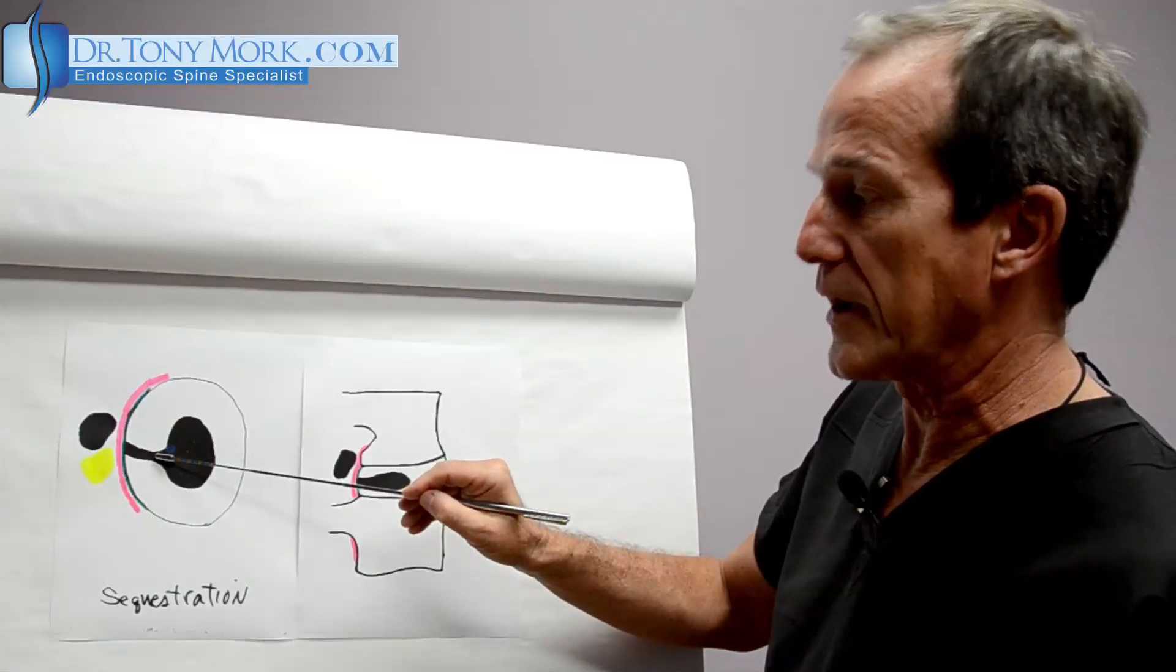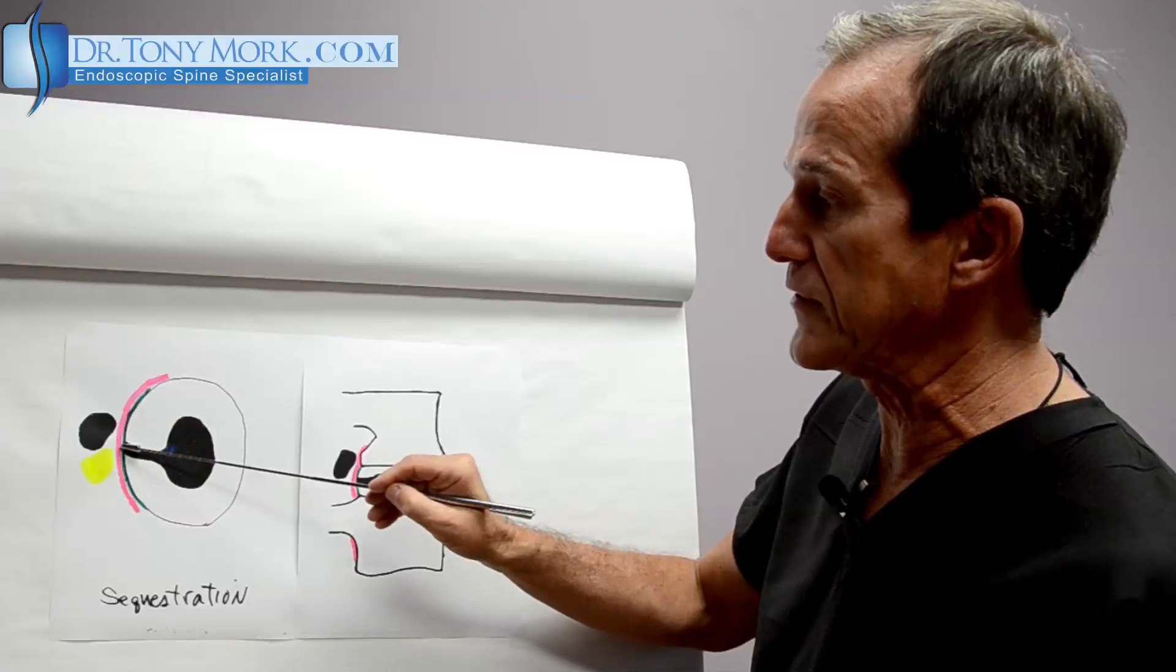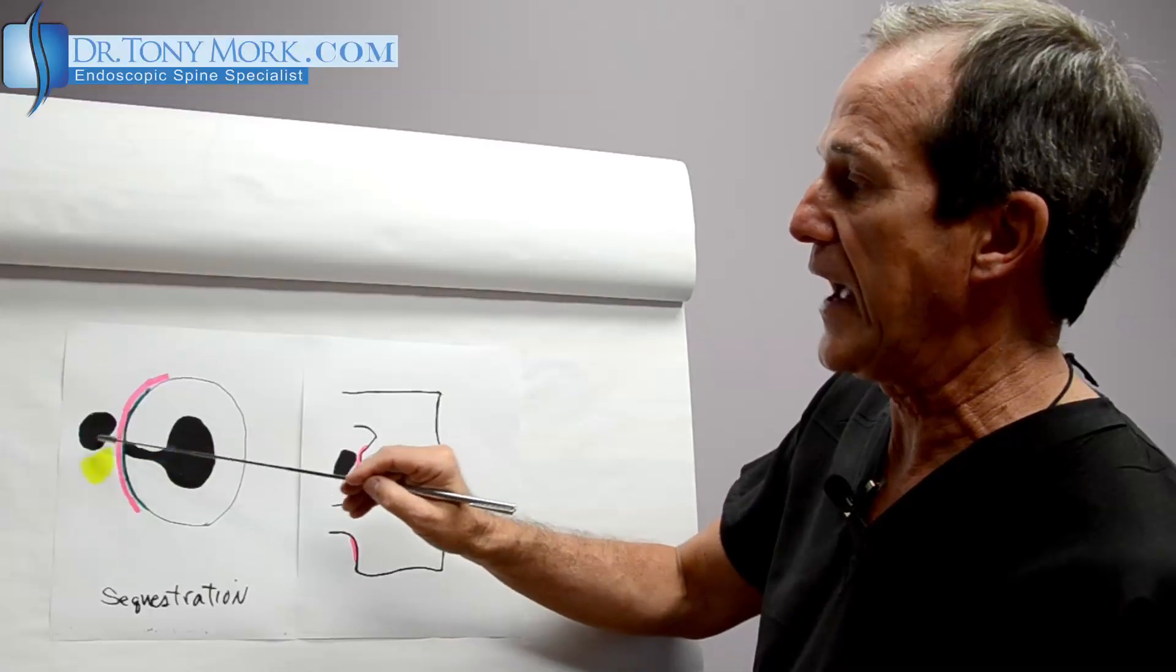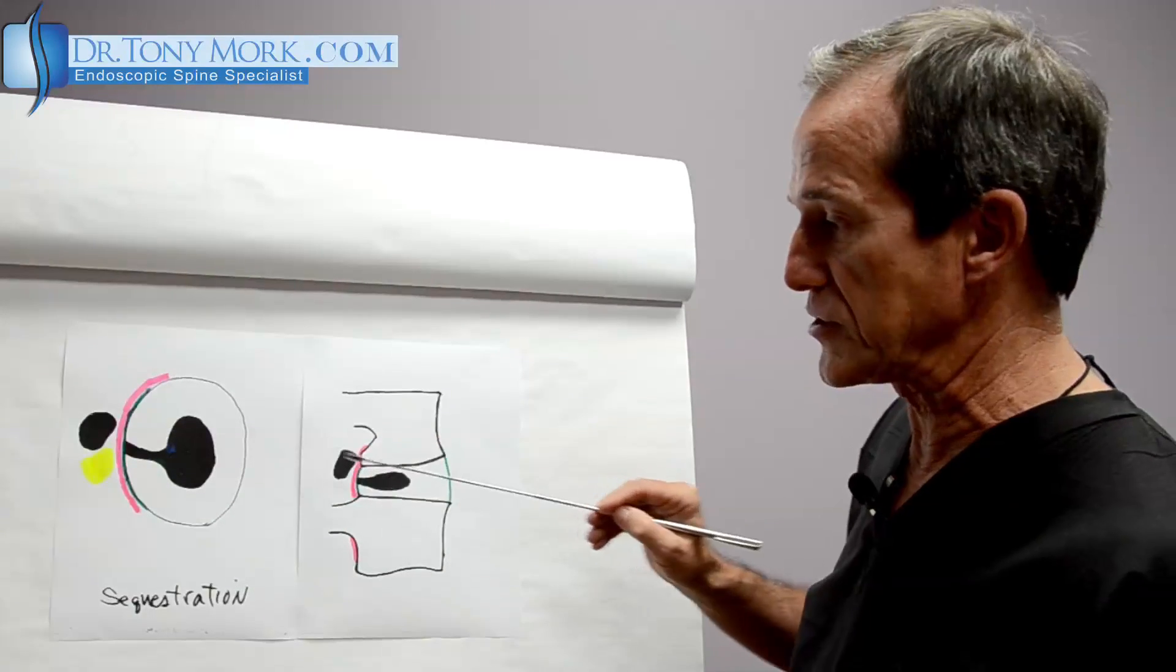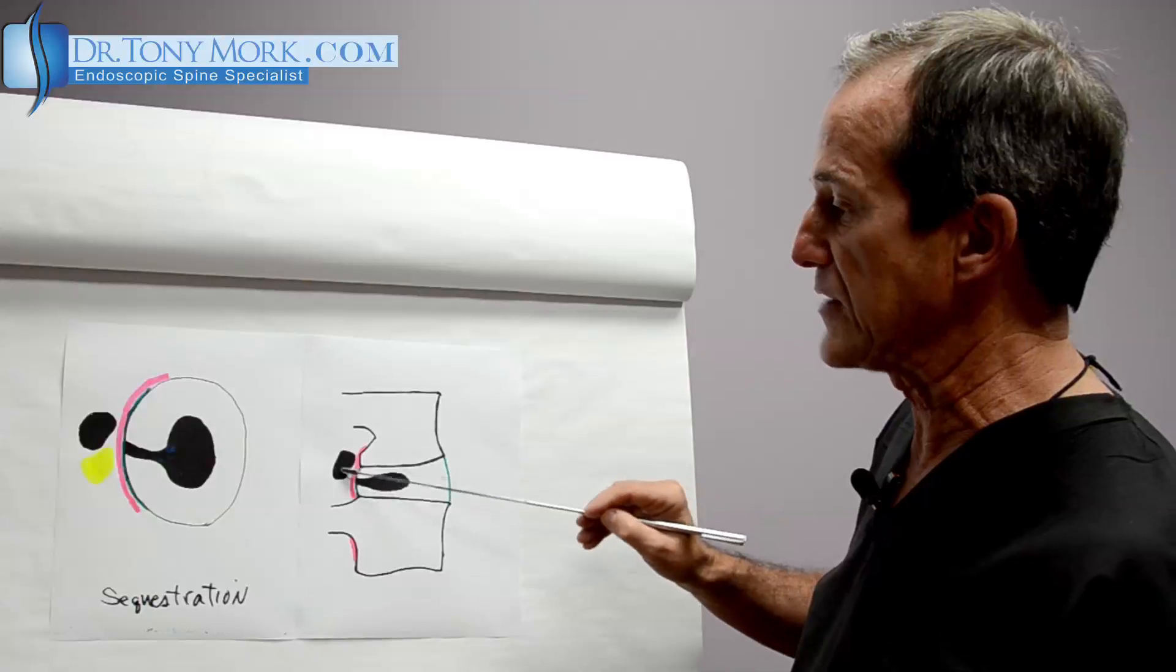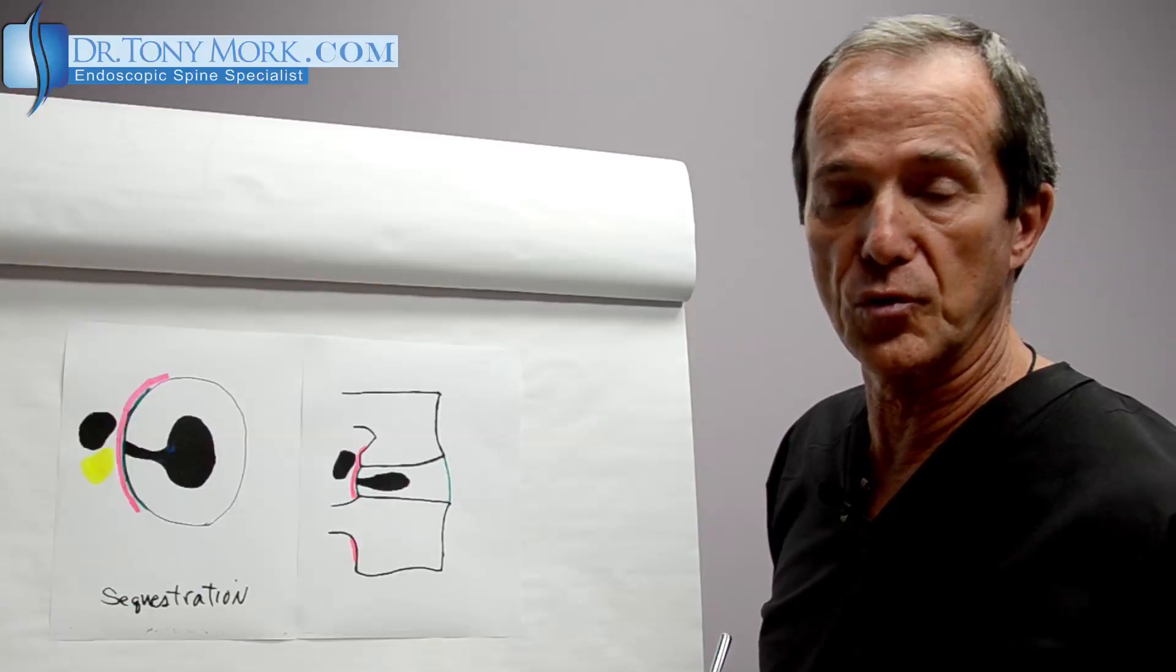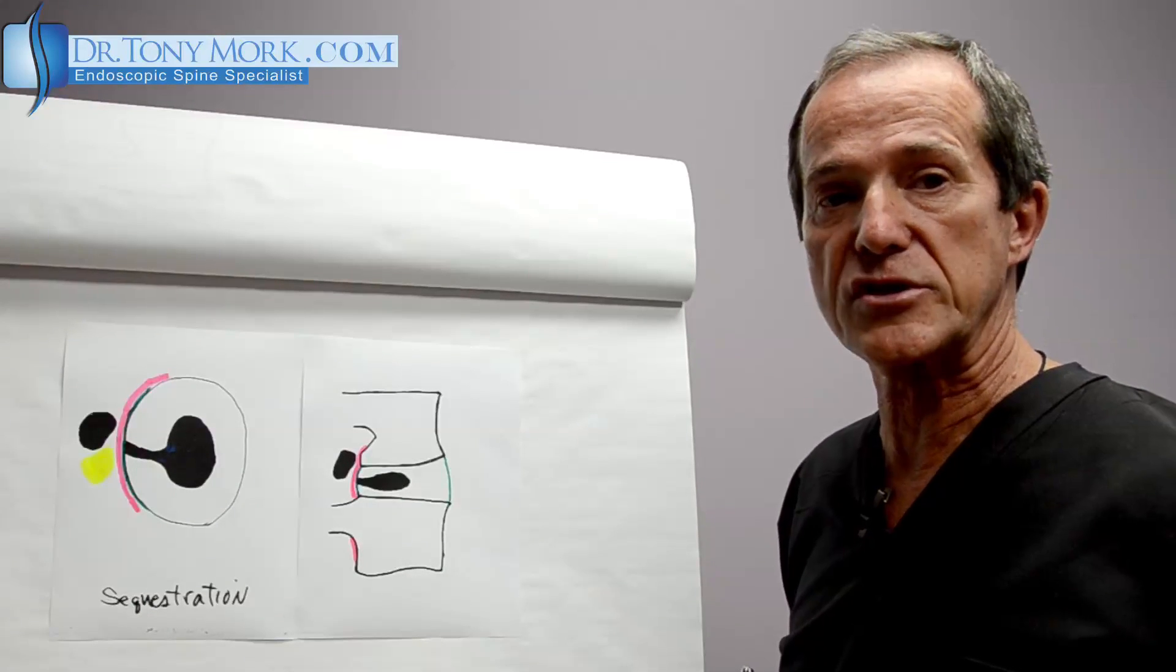So we have a nuclear nucleus here. It extends through a tear in the annulus out to the edge. And then it actually squirts a piece out here that is no longer in continuity with the original nucleus. That is a sequestered fragment.